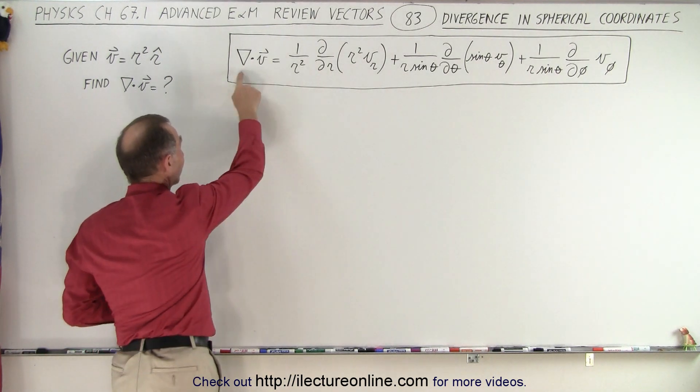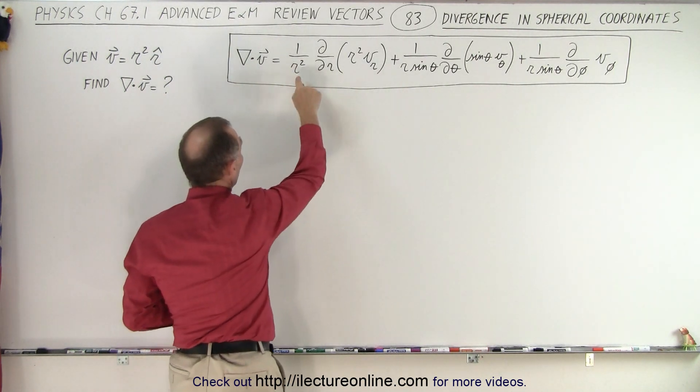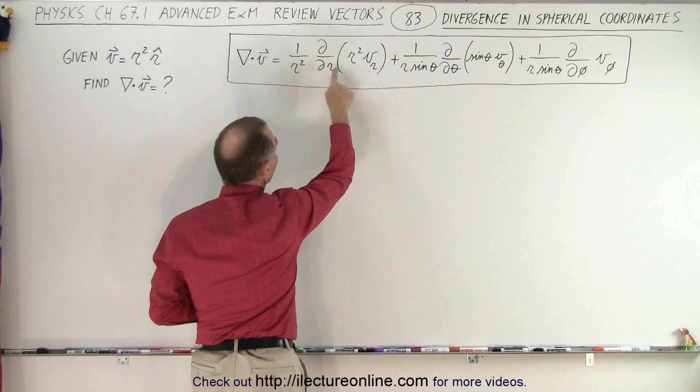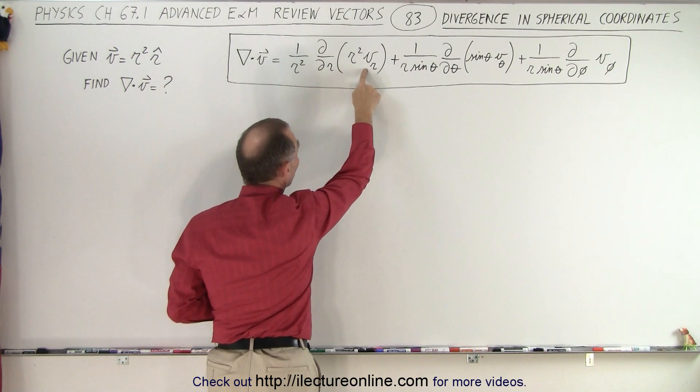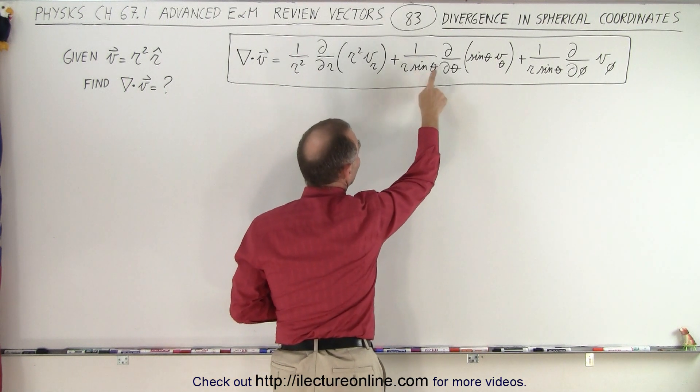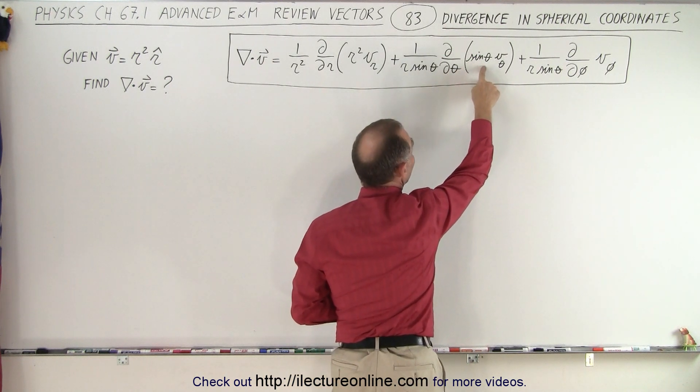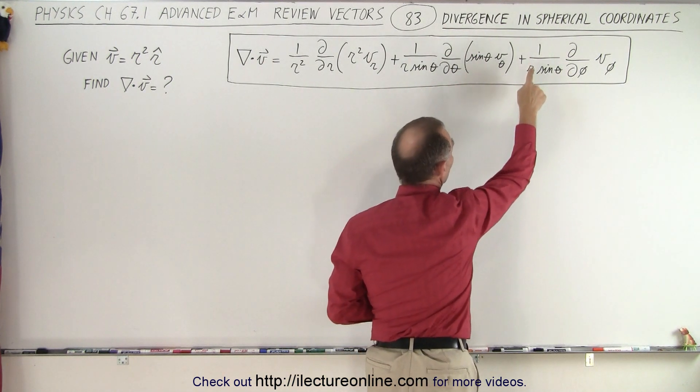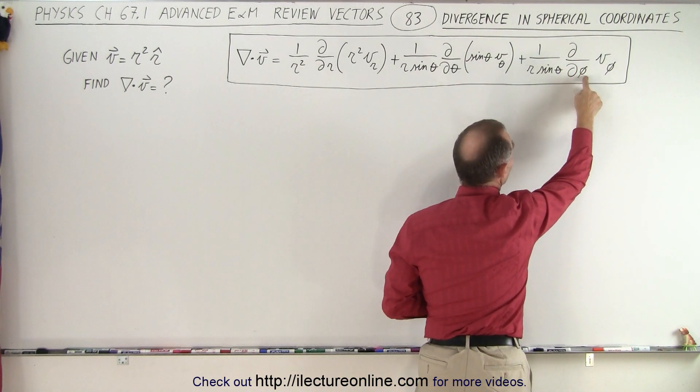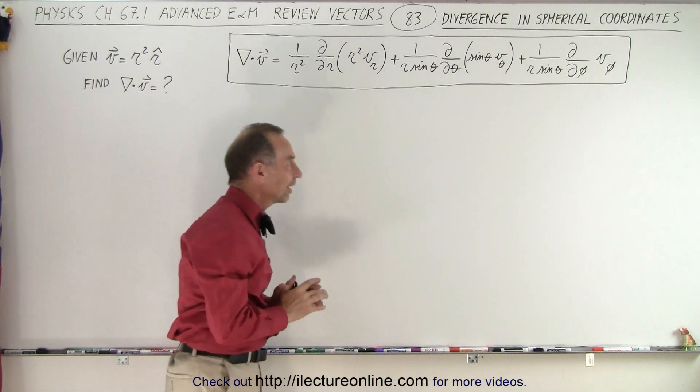Remember that when you take the divergence of a vector, you end up with a scalar quantity. So it's 1 over r² times the partial derivative with respect to r of r² times the r component of the vector, plus 1 over r sine θ times the partial derivative with respect to θ of sine of θ times the θ component of the vector, plus 1 over r sine θ times the partial derivative with respect to φ of the φ component of the vector.